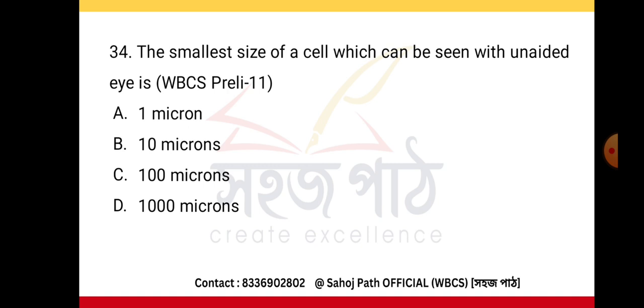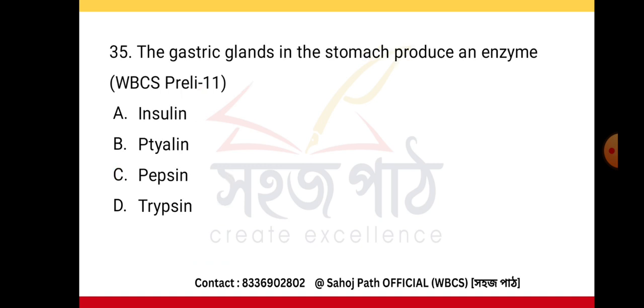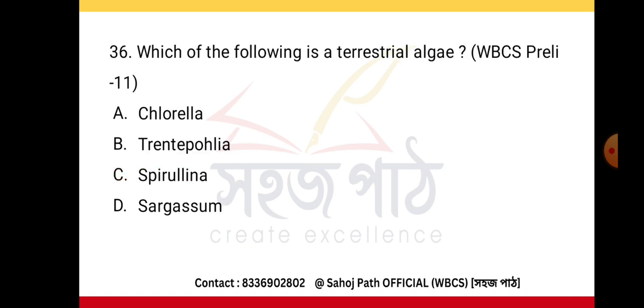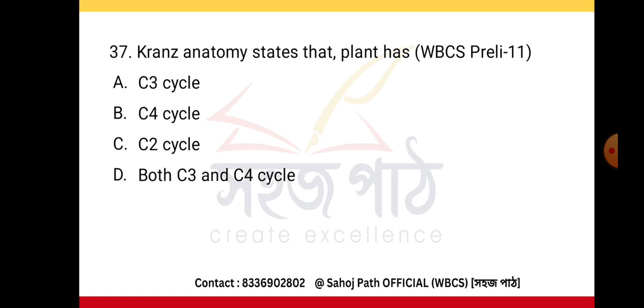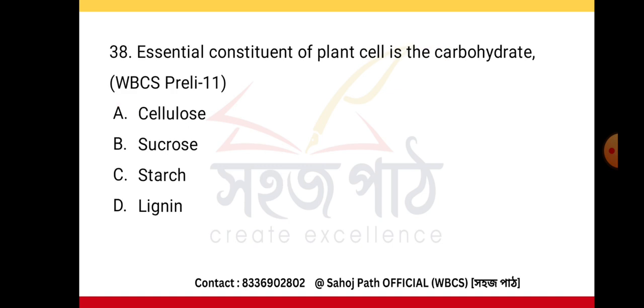The number of amino acids occurring in nature is 20. The smallest size of a cell visible to the naked eye is 100 microns. The gastric glands in the stomach produce the enzyme pepsin. A terrestrial algae example is Prasiola. Kranz anatomy states that a plant has a C4 cycle.